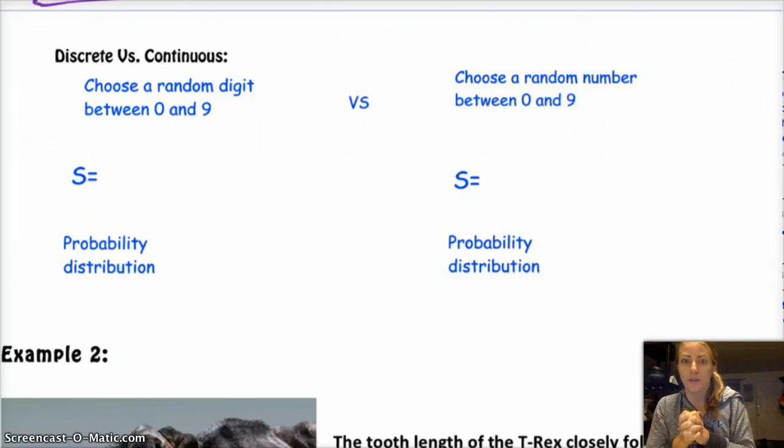And then a continuous random variable might be something like, hey, let's choose a random number between 0 and 9. Well, I could give you an infinite number of possibilities. There are lots and lots and lots of numbers between 0 and 9, right? 0.00001, square root of 2, square root of 3, 5.5, 2 thirds, right? I mean infinite possibilities.